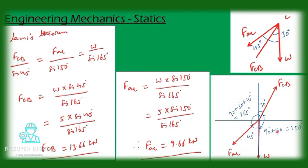From this picture we can find that the angle between FCB and W equal to 90 degrees plus 60 degrees, or 180 degrees minus 30 degrees, that equal to 150 degrees. That equal to 165 degrees.